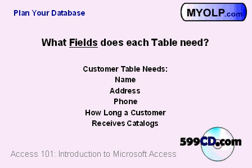The information that goes into tables will be broken up into fields. A field is basically a specific type of data. For example, our customer table will have different fields such as name, address, phone number, and so on. You can break these fields up as much or as little as you want depending on your needs. Some customers are perfectly happy with a single name field, but you may want to break it up into first name, middle initial, and last name. I recommend breaking up your fields into as much detail as you ever think you're going to need.